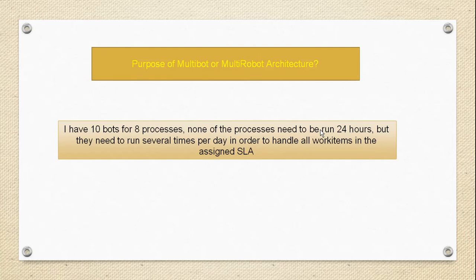For example, your process runs monthly with 10 lakh records and the client gives a timeline of Monday to Tuesday — 48 hours. If the work is not completed within 48 hours, you've missed the SLA. If you miss the SLA — the service level agreement — you probably need to give a penalty to the client because of the missed SLA.